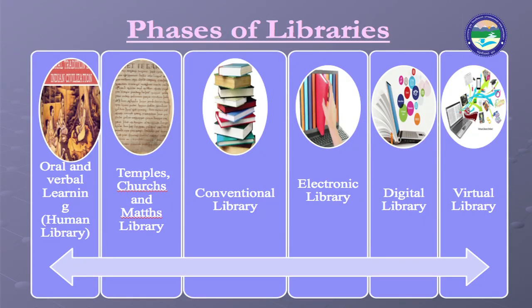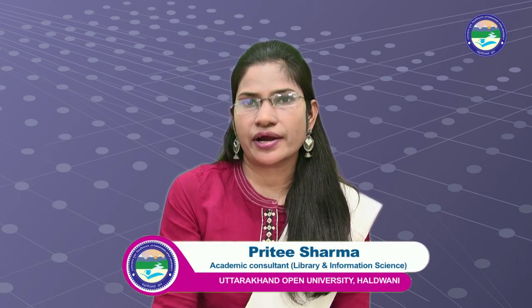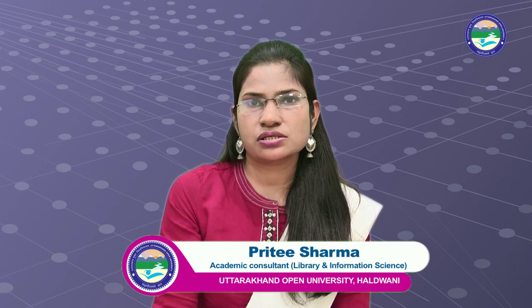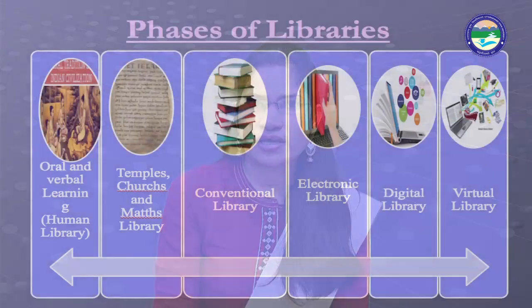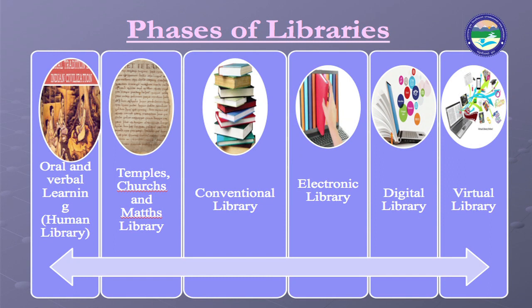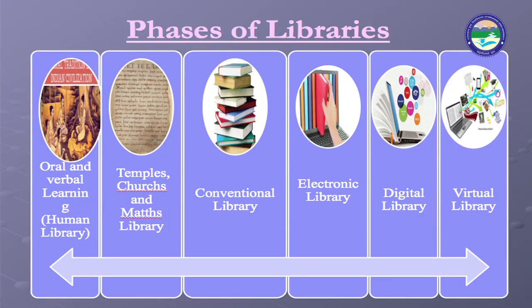That is why there was a need to store knowledge. The second phase is the temples, church and mutt library — a type of handwritten library where information was stored on bhoj-patras, tam-patras, leather sheets, and later on cloth. These could be placed in temples, churches, and mutts. Brahmi and Kharoshti are the ancient writing systems of India. Brahmi script was the earliest writing system, and Sanyuktagam was the first book written on bhoj-patras.